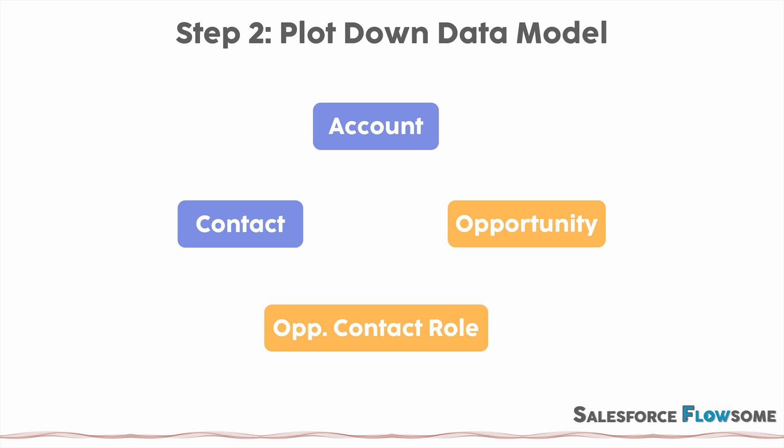To draw the data model, we will use the standard Salesforce notation. For a one-to-many relationship, you put a fork between two objects, and the fork side will be the child side. For example, account is the parent, and opportunity and contact are the children — one account can have many opportunities. For many-to-many relationships, draw down the junction objects explicitly as well. For example, opportunity and contact can have a many-to-many relationship, so we draw the junction object which is opportunity contact role. For the parent side, put it one level up, and vice versa. When you build more advanced flows, you will start using objects we don't see from the user interface, so make sure you search and utilize the developer guides.